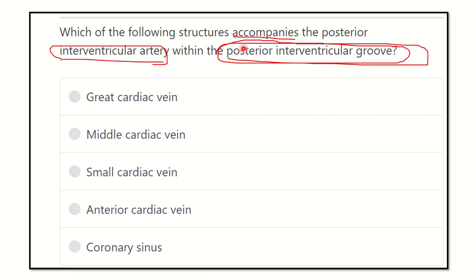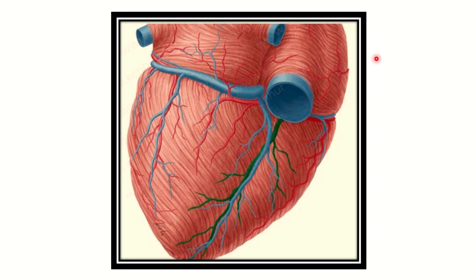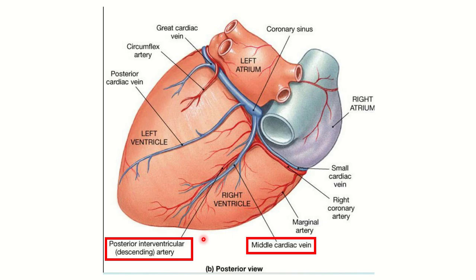Here we can see the left ventricle and the right ventricle. Between the right and left ventricle there is a groove or depression called the posterior interventricular groove. We can see a vein present in the posterior interventricular groove, and also an artery — the posterior interventricular artery. We now need to find out the name of this vein.